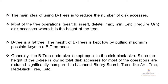The main idea of using B-tree is to reduce the number of disk accesses. Most tree operations — search, insert, delete, maximum, minimum etc. — require O(h) disk accesses where H is the height of the tree. B-tree is a fat tree. The height of B-tree is kept low by putting the maximum possible keys in a B-tree node. Since the height of the B-tree is low, total disk accesses for most operations are reduced significantly compared to balanced binary search trees like AVL tree, red-black tree etc.